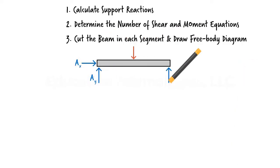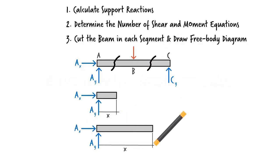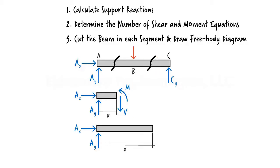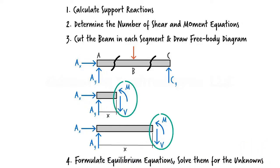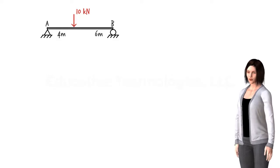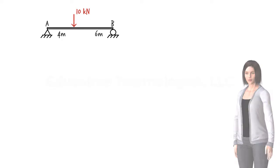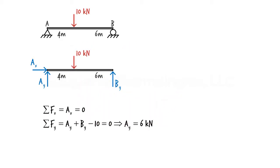Let's go through this process using a simple example. Consider a simply supported beam subjected to a concentrated load of 10 kN, applied 4 meters from the left end of the beam. We wish to formulate the shear and moment equations for the beam. Step 1: find the support reactions. This involves drawing the beam's free body diagram, formulating the equilibrium equations for the entire beam, then solving them for the unknowns.